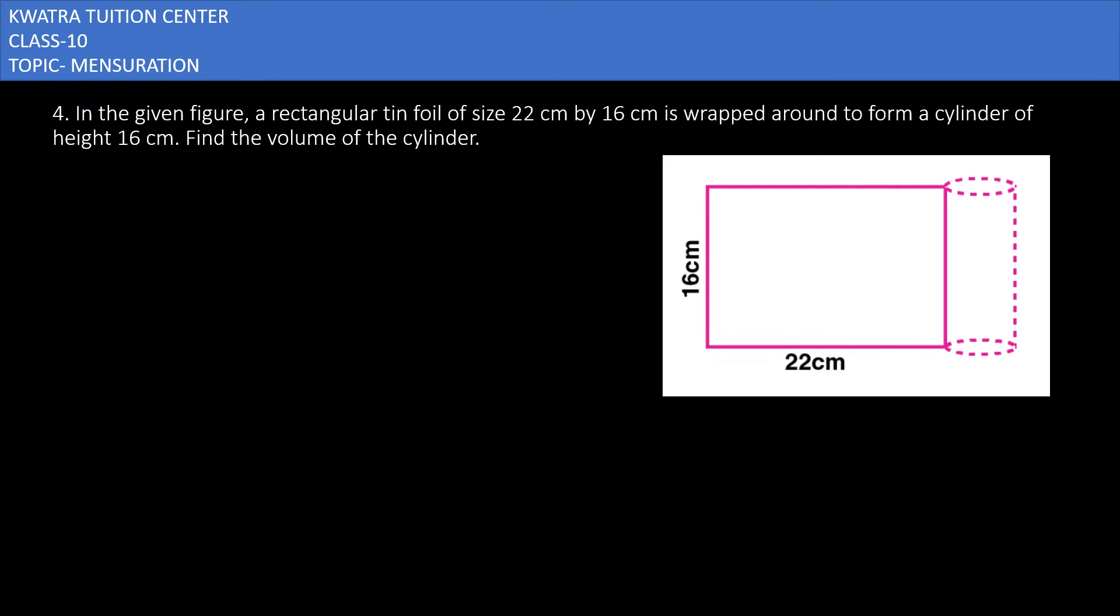Let's start with question number four. It says in the given figure, a rectangular tin foil of size 22 centimeter by 16 centimeter is wrapped around to form a cylinder of height 16 centimeter. Find the volume of the cylinder.